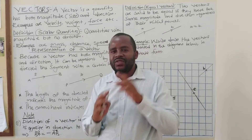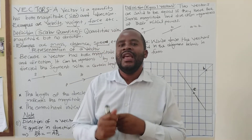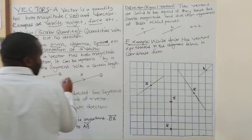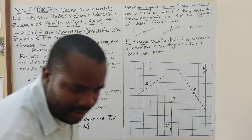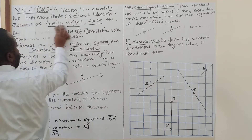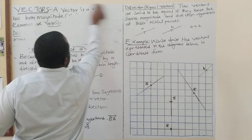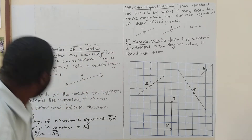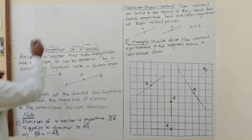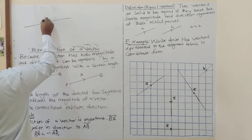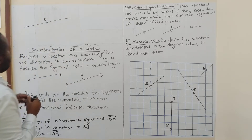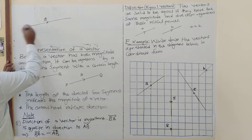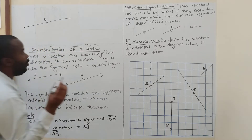So how do you represent a vector? Because a vector has two things — direction and magnitude — it can be represented by a directed line segment. So if you have a line like this, we can call this vector 'a'. The length of the directed line segment represents the vector.